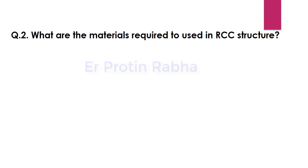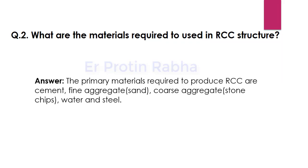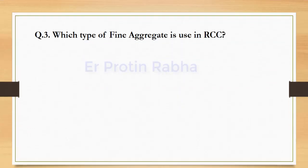Question number two: what are the materials required to use in an RCC structure? The primary materials required to produce RCC are cement, fine aggregate (commonly known as sand), coarse aggregate (stone chips), water, and steel. These are the primary materials required to produce an RCC structure.